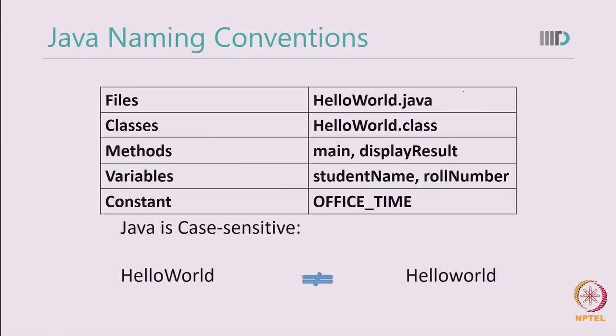I hope you have successfully installed Java. Now let us try to understand what the Java programming language is. Let us first start with Java naming conventions. Java is a case-sensitive language, which means that even though small and capital letters may refer to the same word, Java treats them differently. For example, 'HelloWorld' written with capital H and capital W is different from 'helloWorld' written with only one capital letter.